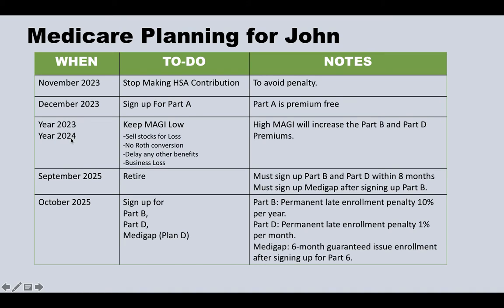In 2023 and 2024, while John is still working and earning high income, he needs to manage his income carefully because that income will impact the Part B and Part D premiums he'll pay when he enrolls in Medicare. Keep MAGI low: sell stocks at a loss, avoid Roth conversions, delay other income, and consider business losses to reduce MAGI. Higher MAGI will permanently increase Part B and Part D premiums.